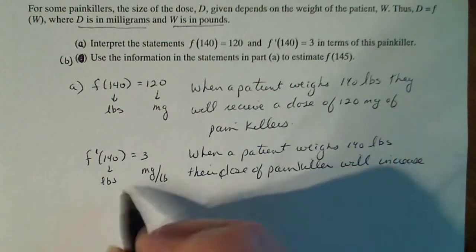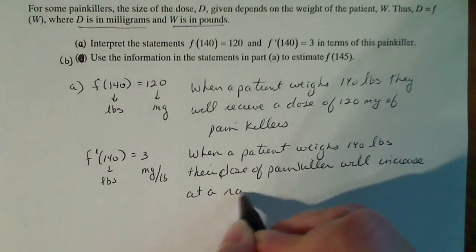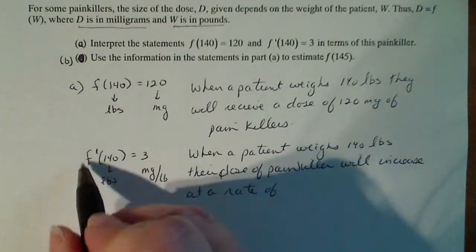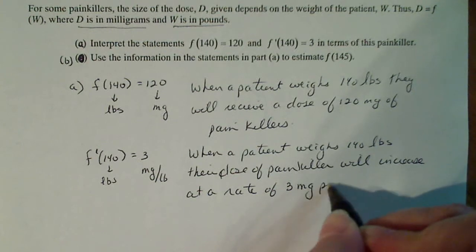And I get the word increase because this number is positive at a rate of—I add the phrase 'at a rate of' because it's a derivative—then I would say three milligrams per pound.